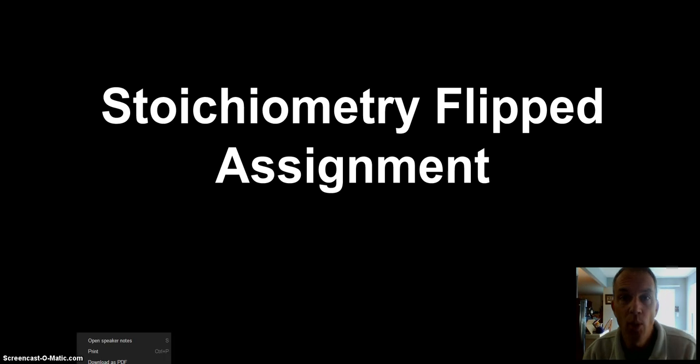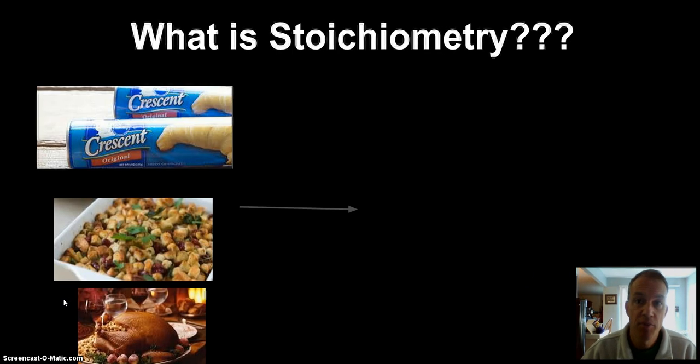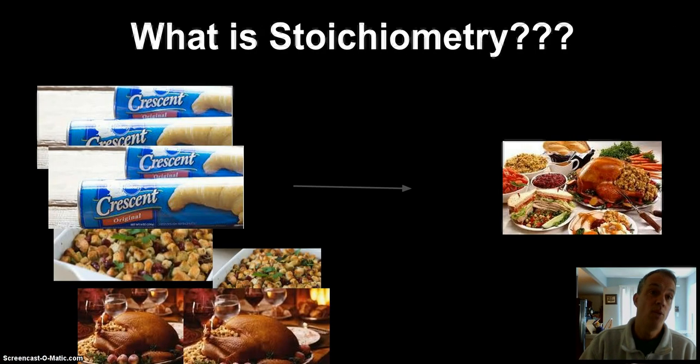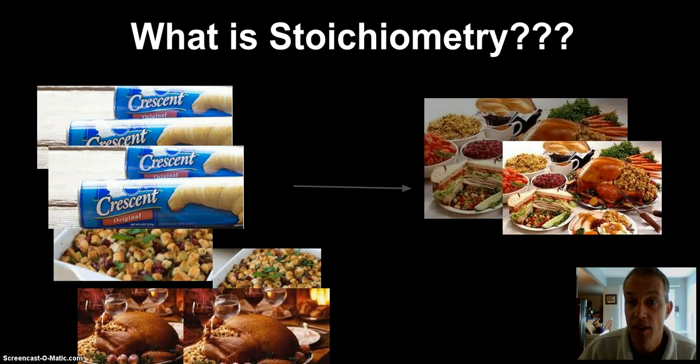Imagine Thanksgiving dinner. If you're going to plan a Thanksgiving dinner, you want to have rolls, stuffing, and a turkey, enough to feed a family of five. All of a sudden, you get a call from Aunt Edna and Uncle George, and they're going to bring all their kids, so you're going to have to plan accordingly. You run out to the store, you get more stuffing, you get more turkeys, you get more rolls.